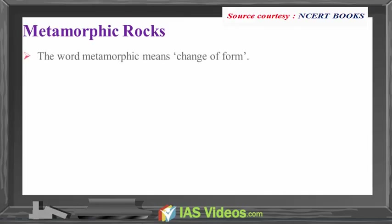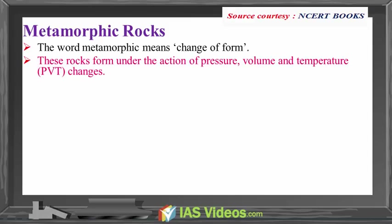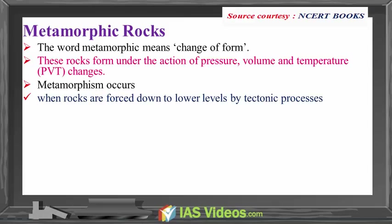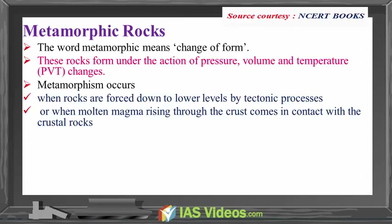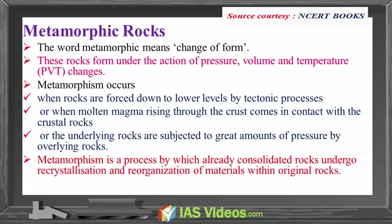Metamorphic rocks: the word metamorphic means change of form. These rocks form under the action of pressure, volume and temperature changes. Metamorphism occurs when rocks are forced down to lower levels by tectonic processes, or when molten magma rising through the crust comes in contact with the crustal rocks, or the underlying rocks are subjected to great amounts of pressure by overlying rocks. Metamorphism is a process by which already consolidated rocks undergo recrystallization and reorganization of materials within original rocks.